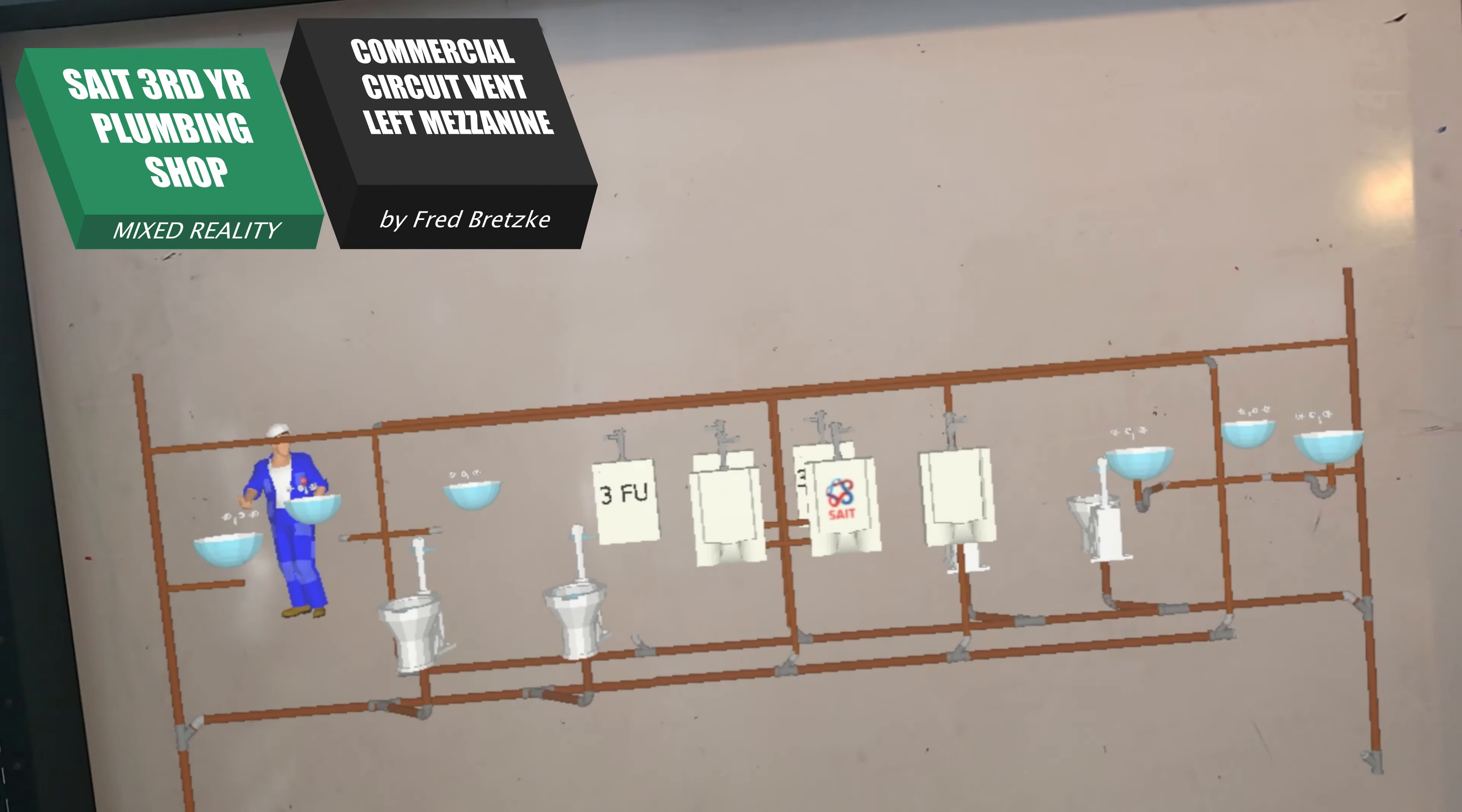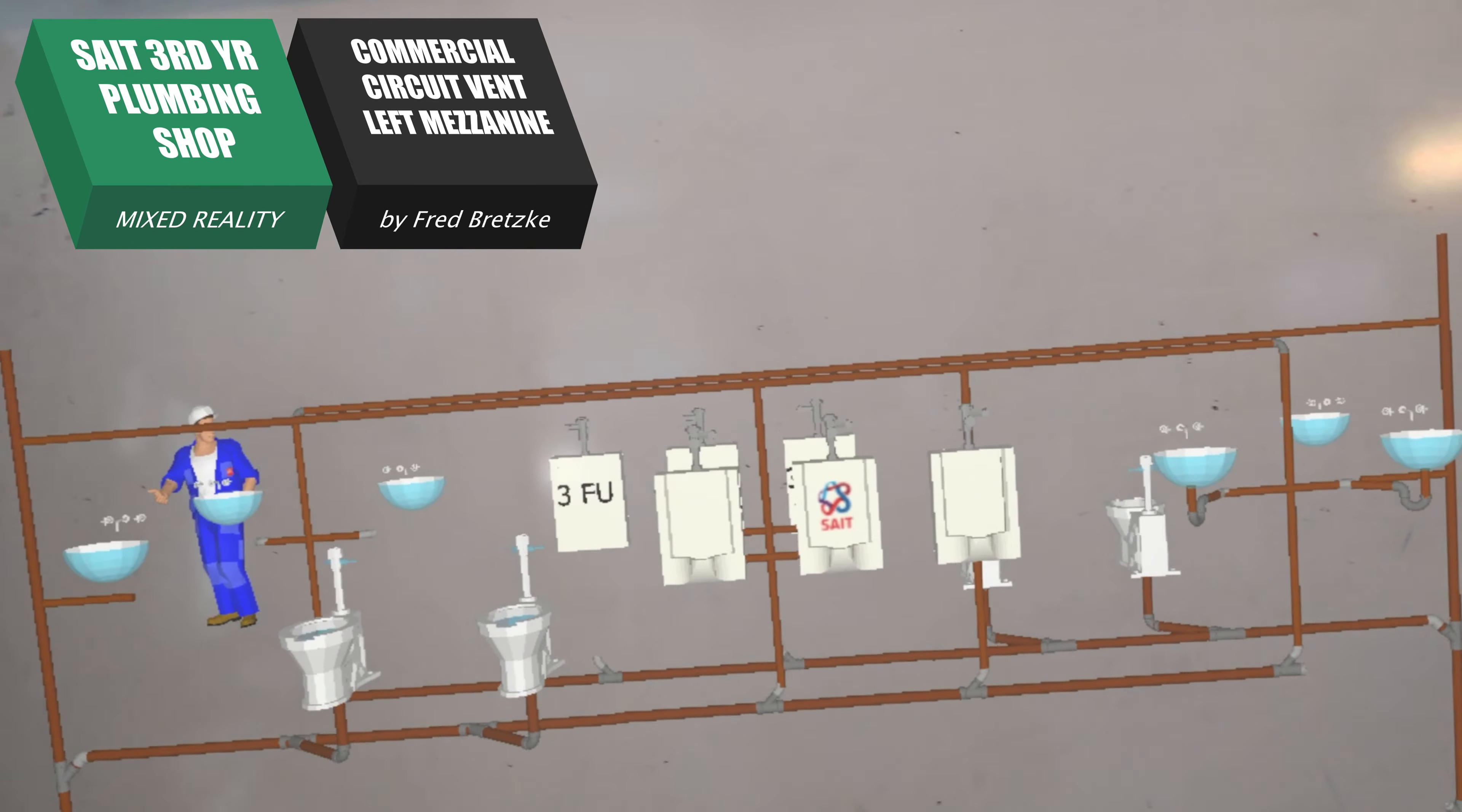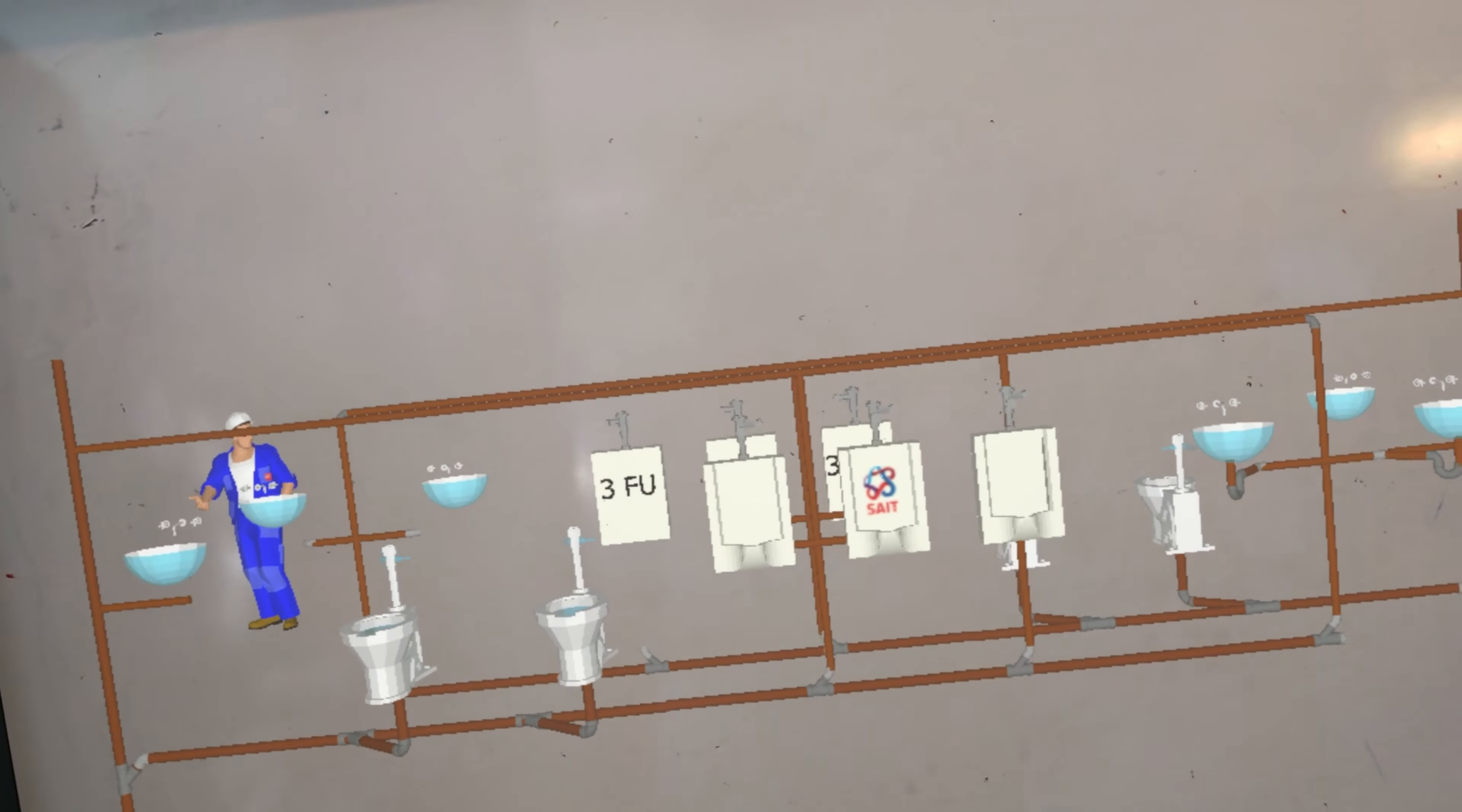Good afternoon, it's Fred Bretzky, just teaching a little bit of Third Year Shop from my Living Whiteboard here at home. So this is one of the examples of what we can do in Third Year Shop. This would be on the left-hand mezzanine in our commercial shop, where we have a pony wall, and we could do a project on either side of it, as you can see here.